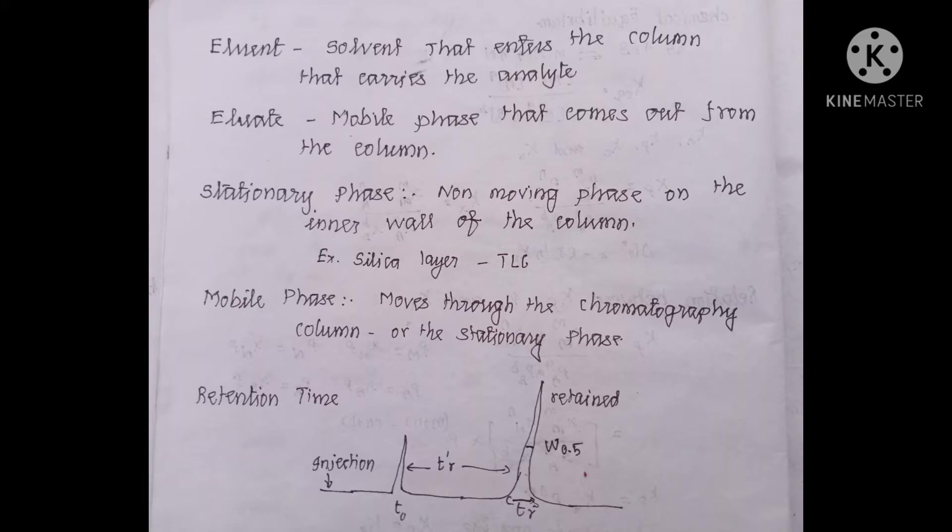The next is the eluate. The eluate is the same solvent after the separation. We are collecting it at the bottom of the chromatography column. The solution collected at the bottom of the chromatography column is called the eluate.